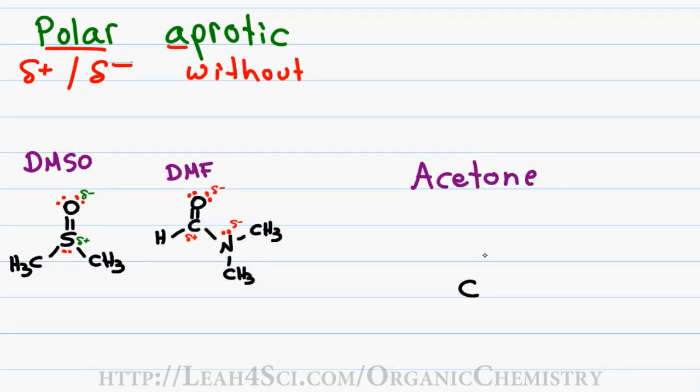Acetone is simply the common name for propanone which has a carbon double bound to an oxygen and once again two methyl groups. And if you're familiar with ketones you'll know that oxygen is partially negative and carbon partially positive. Once again a polar molecule with no hydrogens to donate for hydrogen bonding.